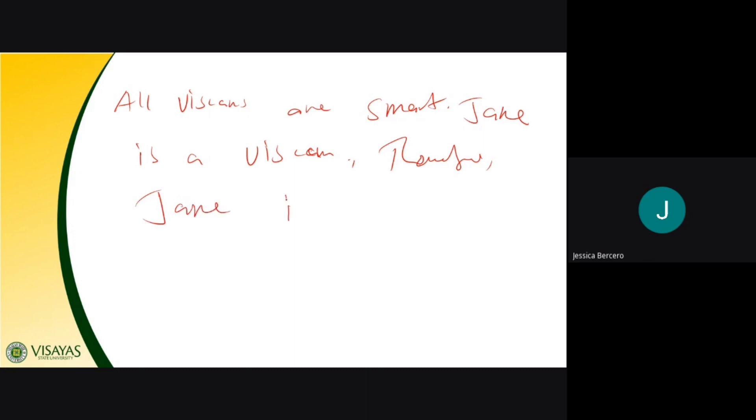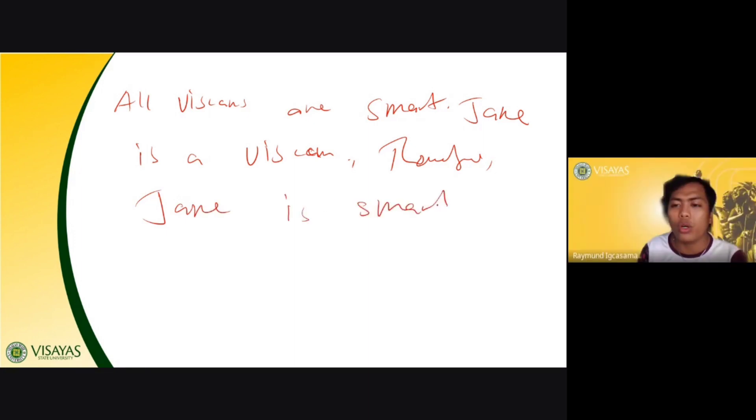Example. All Viscans are smart. Jane is a Viscans. Therefore, Jane is smart. Very good.